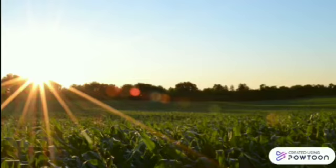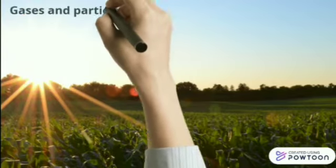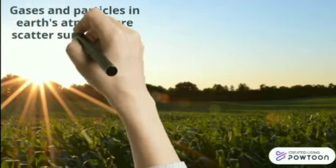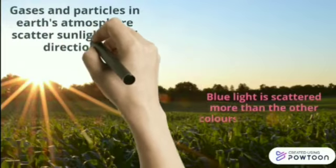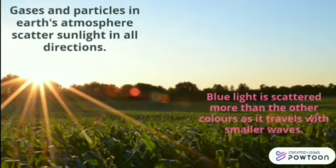As we know, gases and particles in earth's atmosphere scatter sunlight in all directions. Blue light is scattered more than the other colors as it travels with smaller waves.